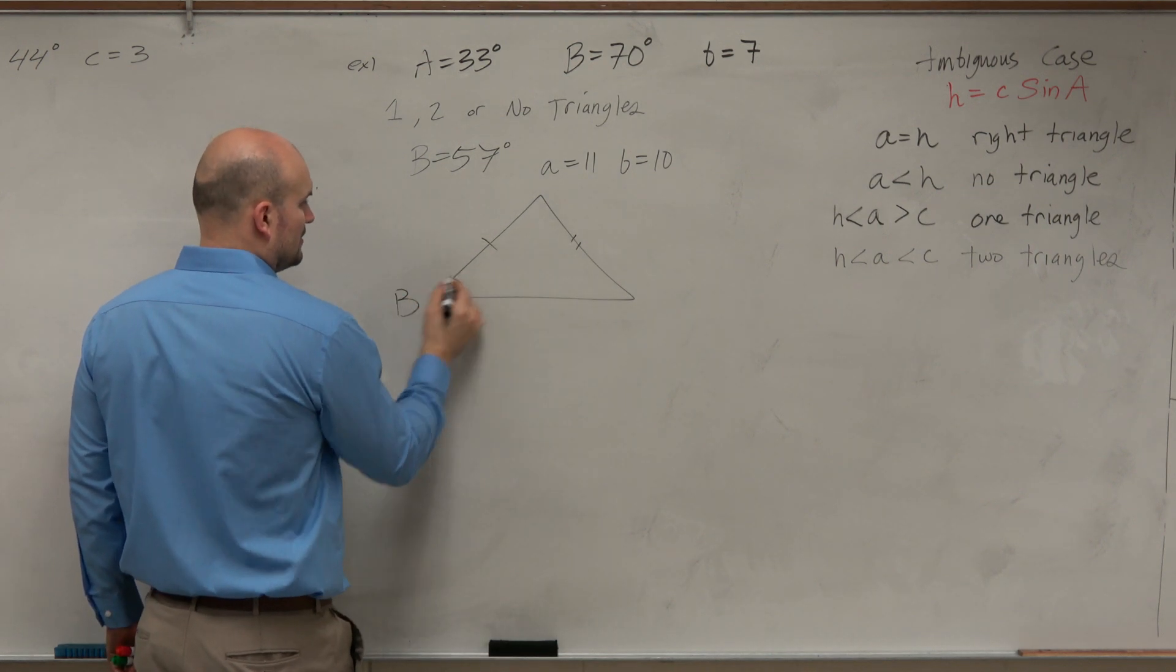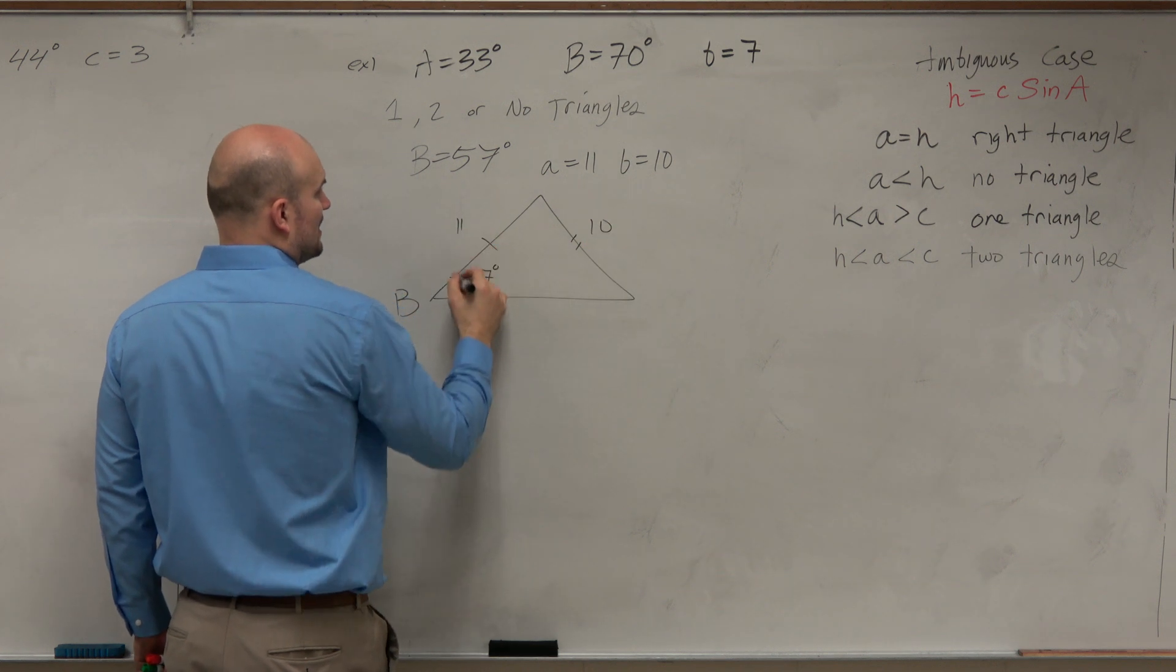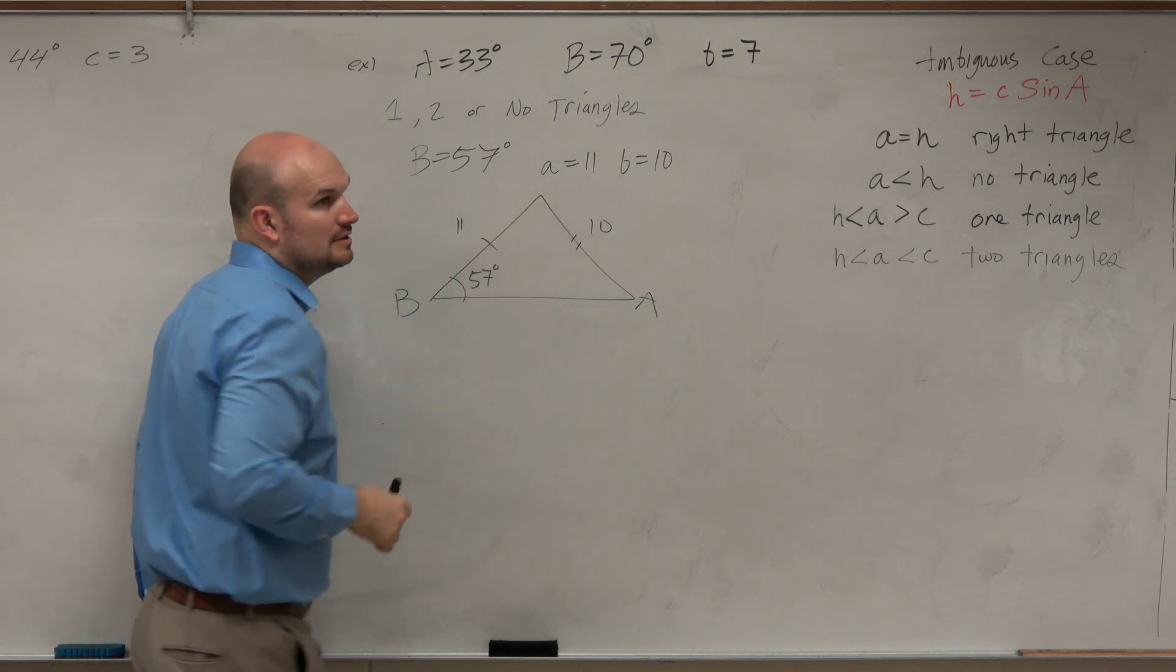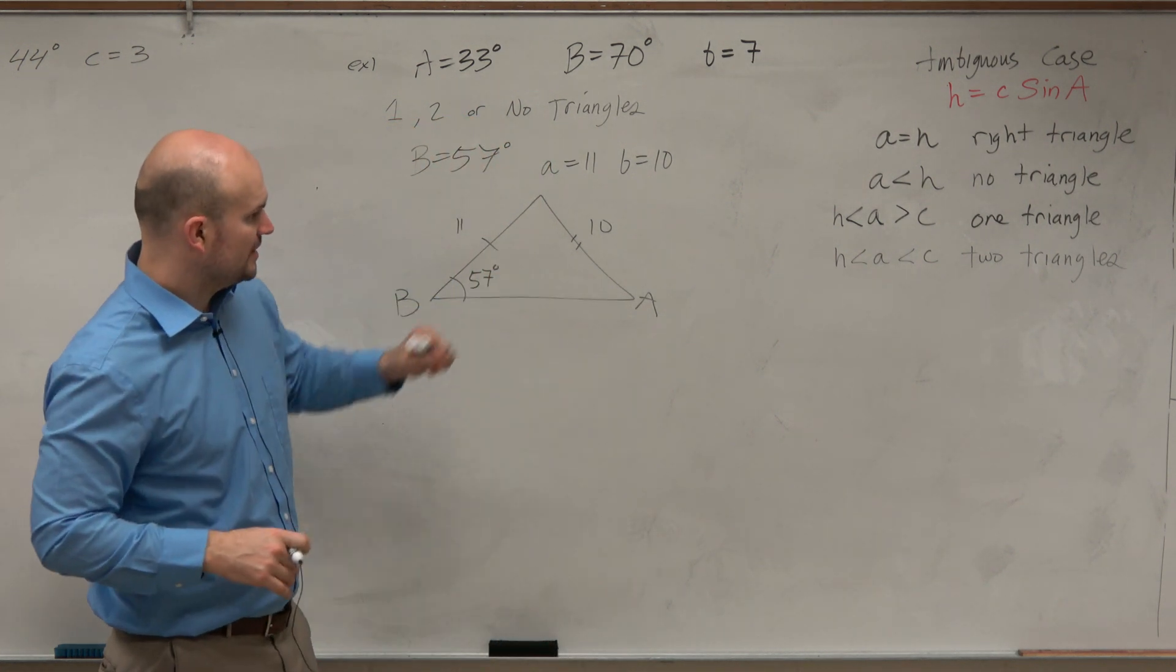So I'm going to put B here, 57 degrees. Therefore, this is 10. That's 11. So that would be A. It doesn't really matter, though, as long as you're not texting on your phone in your lap. So we're looking up here.